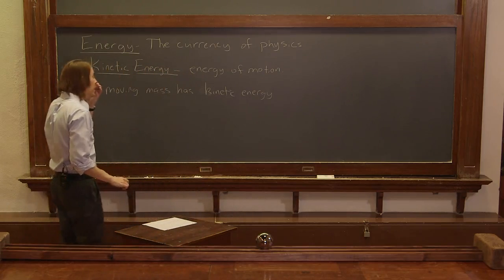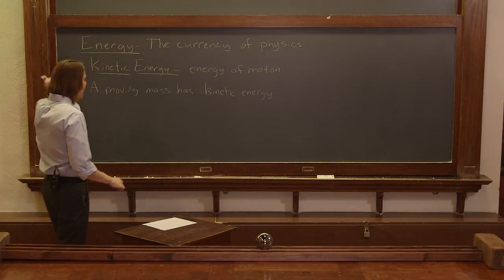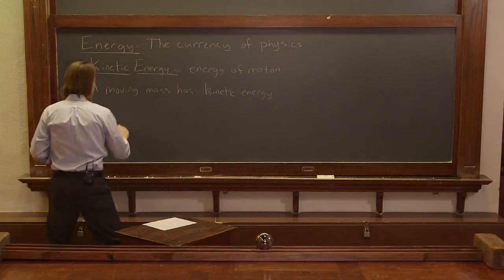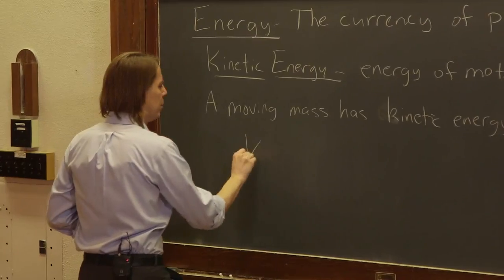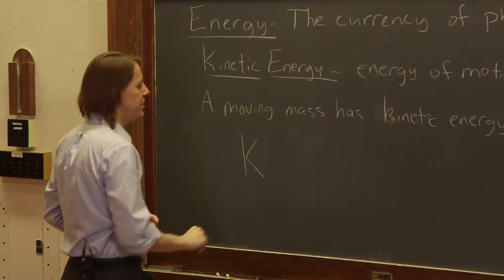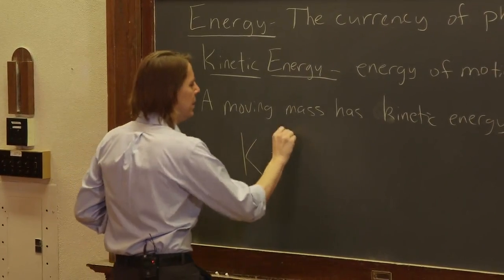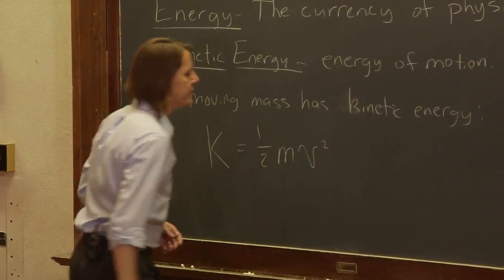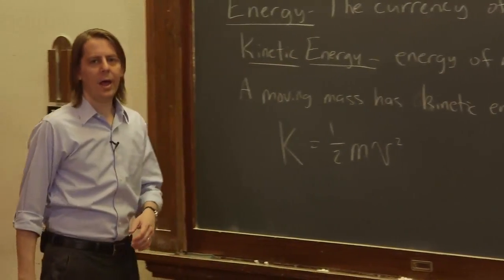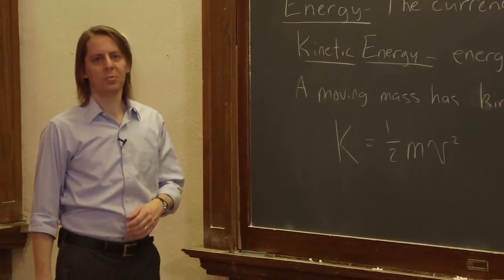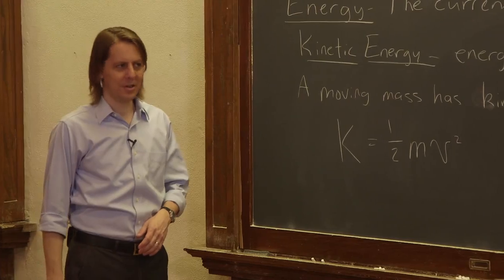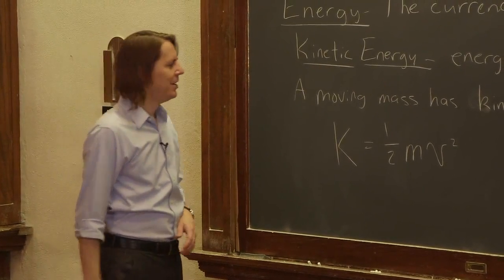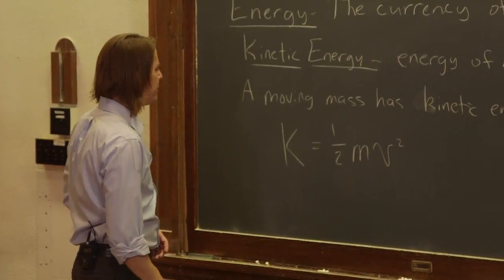A moving mass has kinetic energy. How much? We call kinetic energy K, and it equals one half m v squared. This is one to memorize: kinetic energy of a moving mass is K = ½mv².